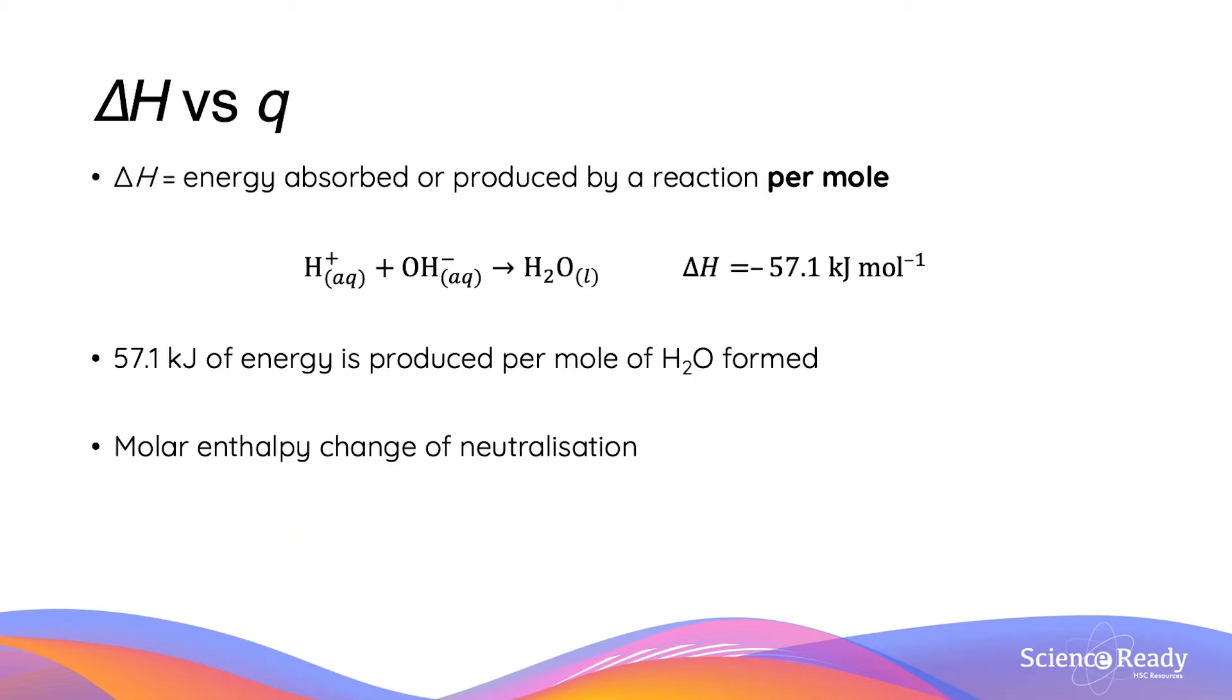So it's important to recognise that there are differences between ΔH and q. ΔH is the enthalpy change of a reaction and is given as energy absorbed or produced by a reaction per mole. For example here, we have this reaction between H⁺ and OH⁻ which is going to produce HCl and it produces 51.7 kJ per mole released.